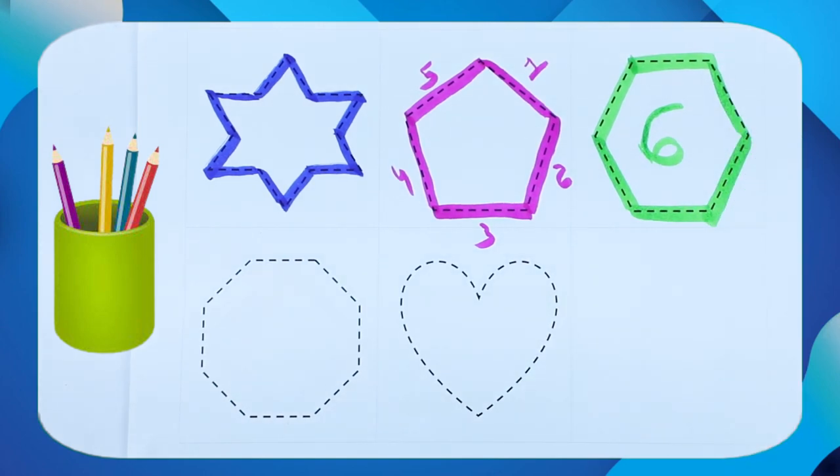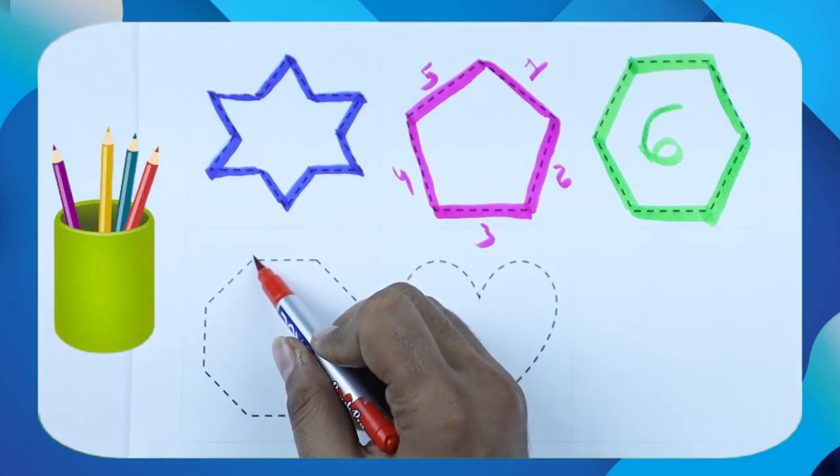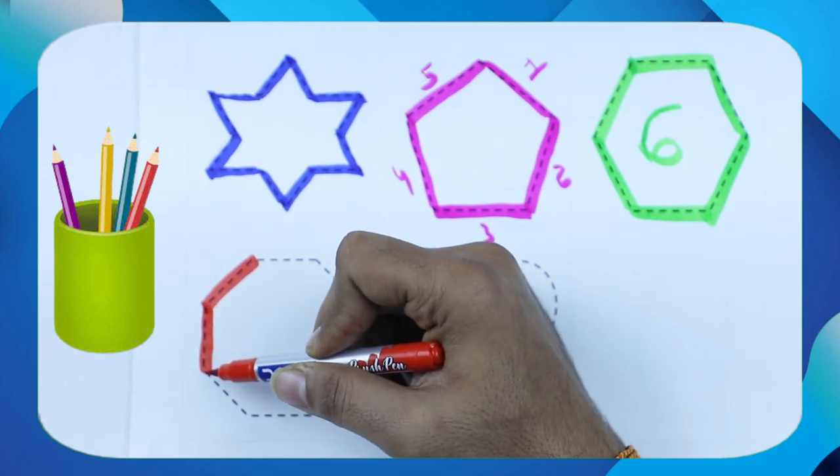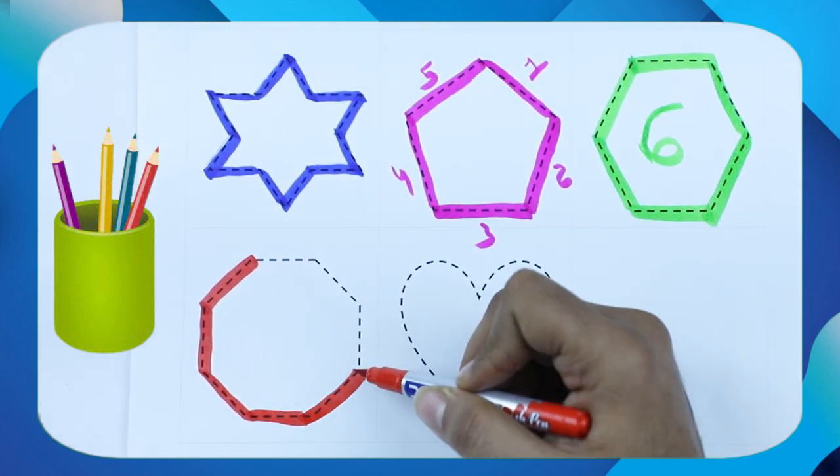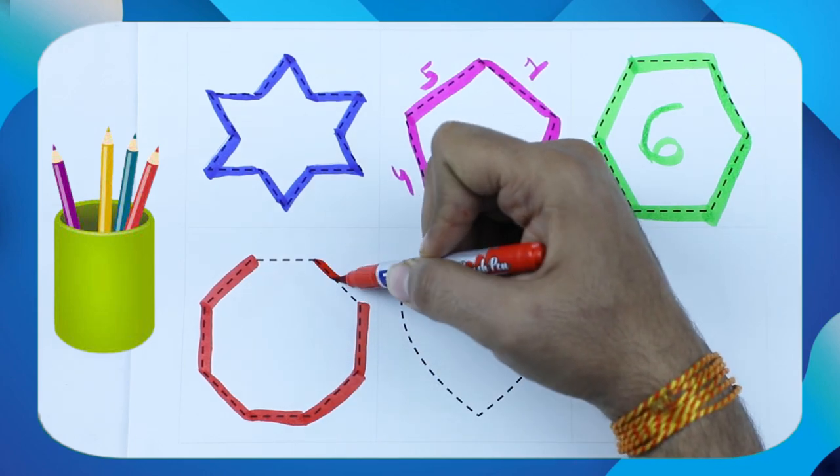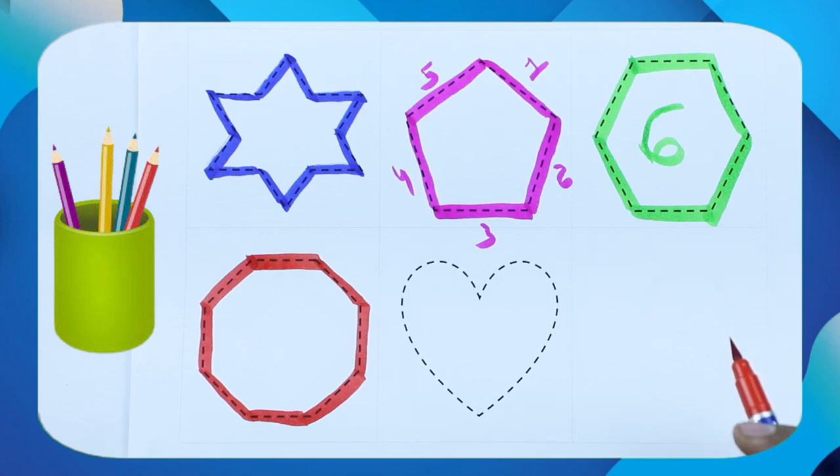Now we make heptagon. One, two, three, four, five, six, seven, eight. It's octagon. Eight lines have octagon. Its shape is octagon. Red color with octagon.